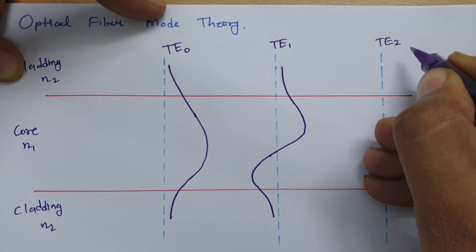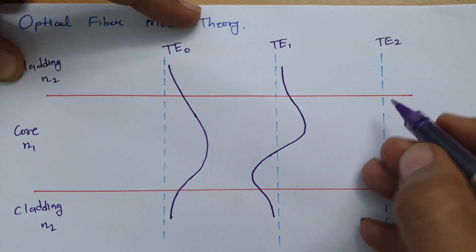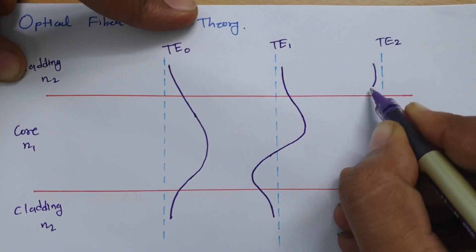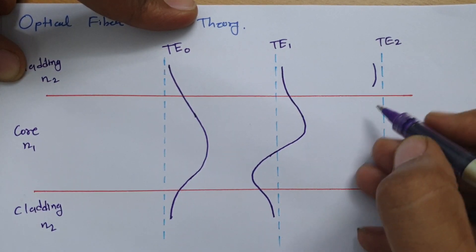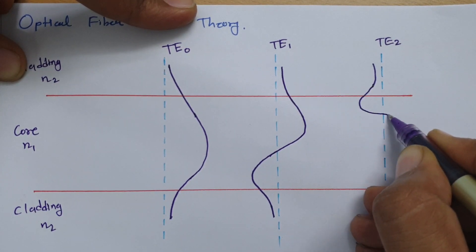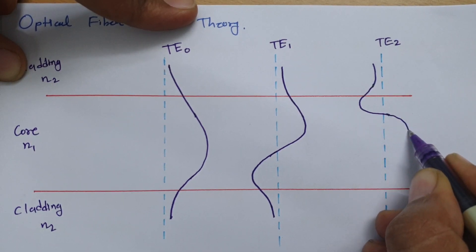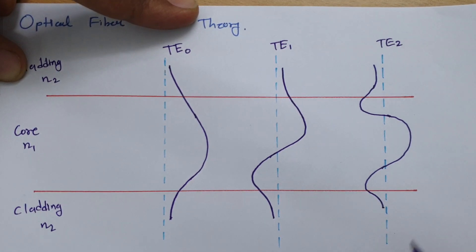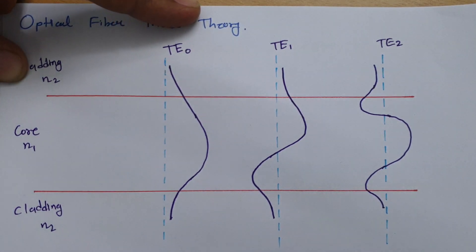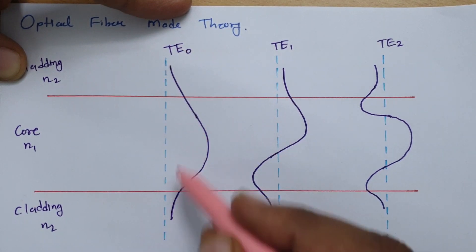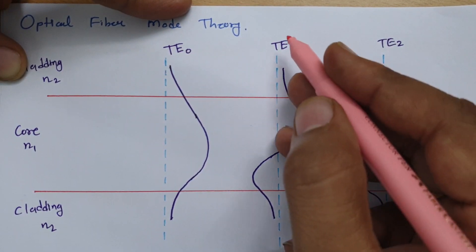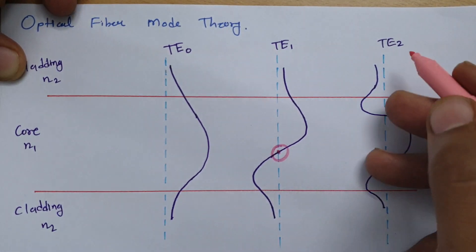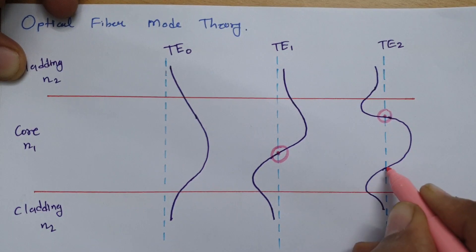For TE2 mode, starting the line from here, two crossings will happen with respect to the reference. So in TE0 mode there is no crossing; in TE1 mode, crossing happens once; and in TE2 mode, crossing happens twice.